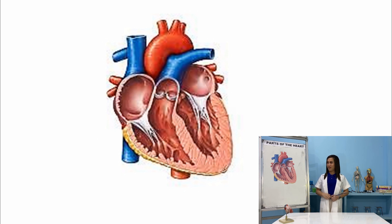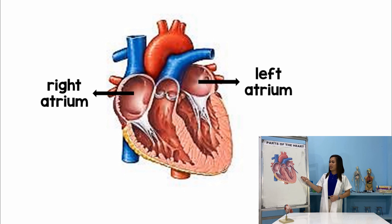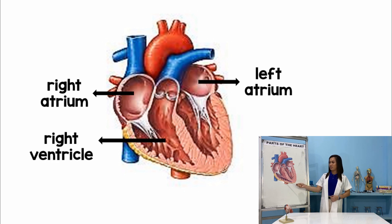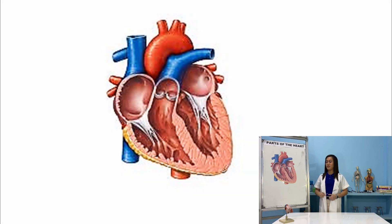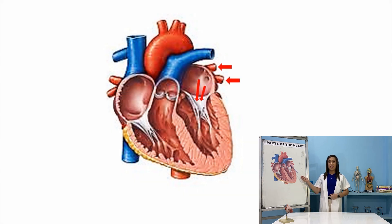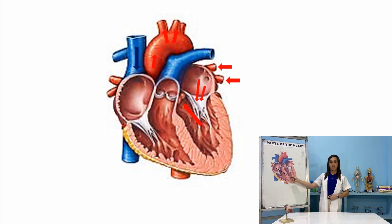So we have the right atrium, left atrium, right ventricle, and left ventricle. The left atrium receives the oxygenated blood from the lungs down to the left ventricle, which pumps the oxygenated blood to other parts of the body, while the right atrium receives the deoxygenated blood from the other parts of the body down to the right ventricle and pumps the deoxygenated blood towards the lungs.